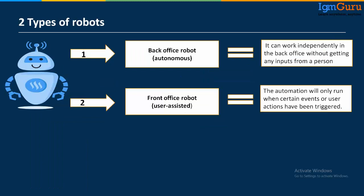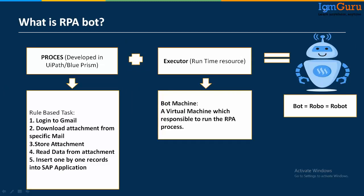There are two types of bots: one is back office and the other is front office. Back office means you don't need to provide any input to the bot — it works independently behind the scenes. Front office means you provide some inputs, and based on those inputs the bot works. A bot or software robot is essentially your RPA process developed in UiPath or any RPA tool, executed or scheduled on a virtual or physical machine.